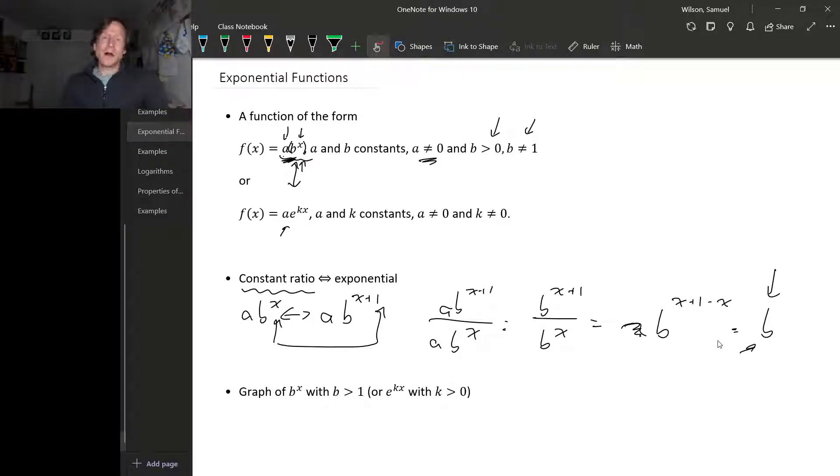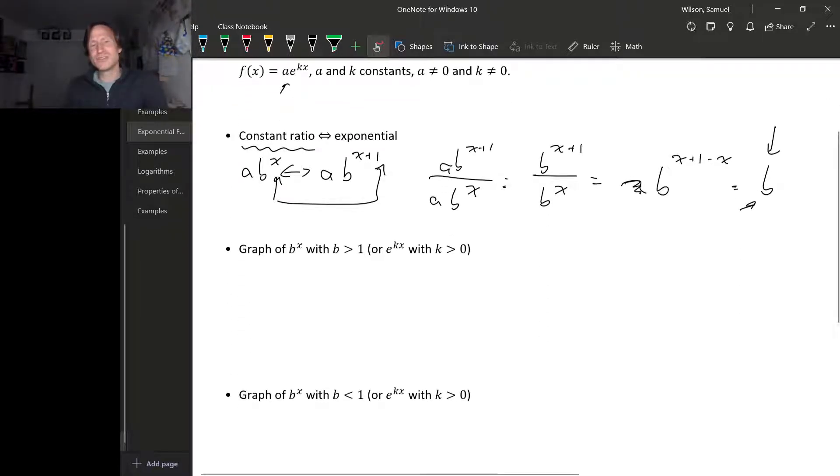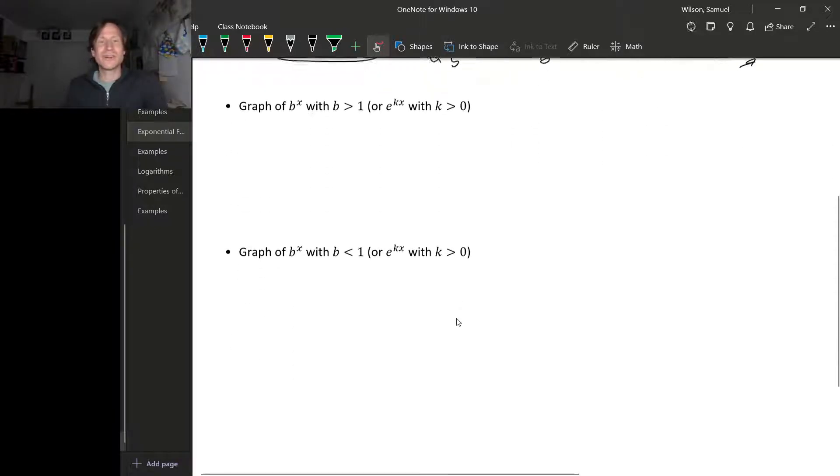One key thing to know about exponential functions is what their graphs look like, and their graphs come in two flavors. There's the flavor where the base b is bigger than 1. This corresponds to, if you're using this version of exponential functions with e to the kx, b bigger than 1 corresponds to k being positive.